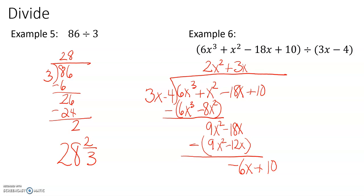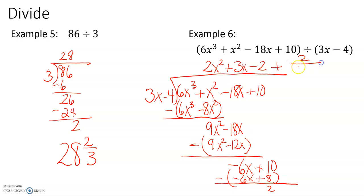Watch your subtraction — it's going to be negative 6x plus 10. 3x times what gives us negative 6x? That's a minus 2. It's going to be negative 6x plus 8. Watch your signs when you subtract, and it's going to be 2. Just like we had a remainder with 86 divided by 3, we have a remainder here. So the answer is 2x squared plus 3x minus 2, plus 2 over 3x minus 4. That is how we write it when we have a remainder with division of polynomials.